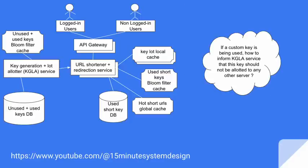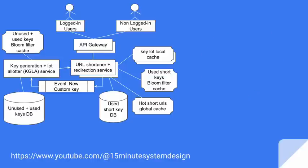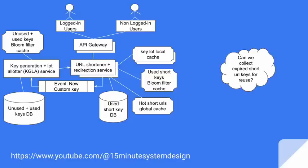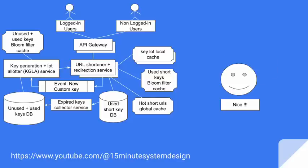If a custom key is being used, how can we inform the KGLA service that it should not allot this key to any other server? This can be done by publishing an event from the URL shortener saying a new custom key is being used — please mark it as used and do not allot it to any other server. Can we also collect expired short URL keys for reuse? Yes. This can be done by having an expired keys collector service which periodically collects all used short keys back into the unused keys table.